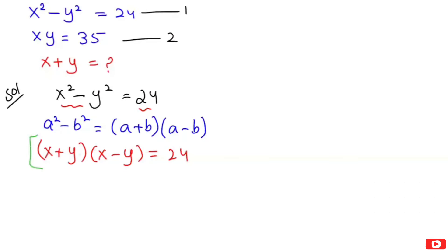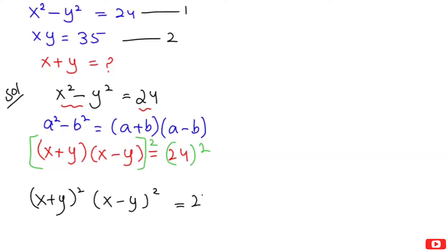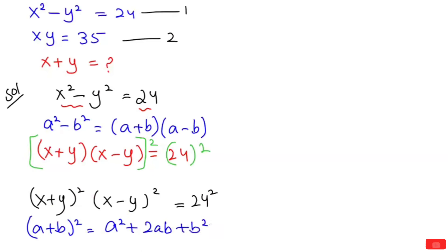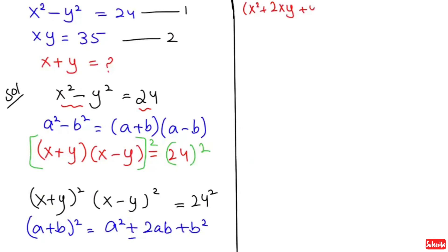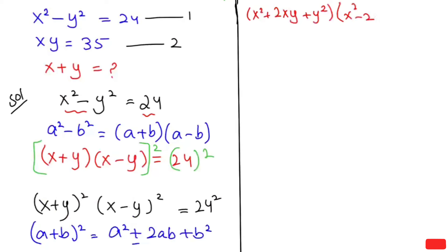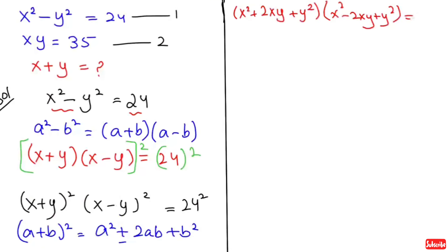Now I'm going to square both sides. So this will turn to (x plus y) whole to the power of 2 times (x minus y) whole to the power of 2 is equal to 24 squared. Now here I'm going to use the algebraic identity: (a plus b)² is equal to a² plus 2ab plus b², and for the negative version it turns negative. So this equation turns to (x² plus 2xy plus y²)(x² minus 2xy plus y²) is equal to 576.